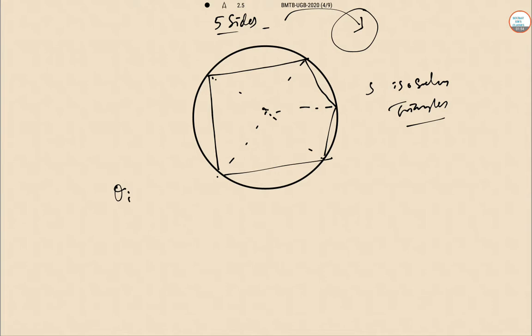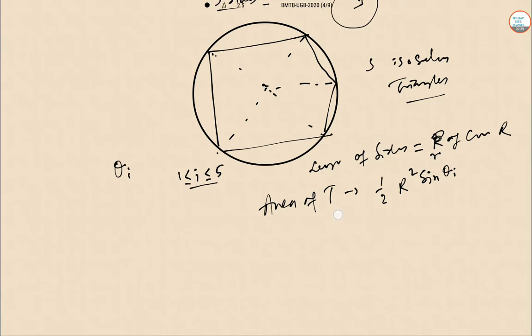Let theta_i be an angle, where i lies between 1 to 5, be the angles of the triangles between equal sides. The length of these sides are equal to the radius of the circle r. So radius of circle r. Now the area of the triangle is 1/2 r squared sine theta_i. So the area of the pentagon is